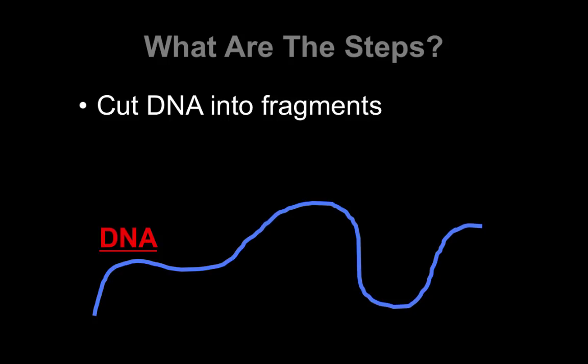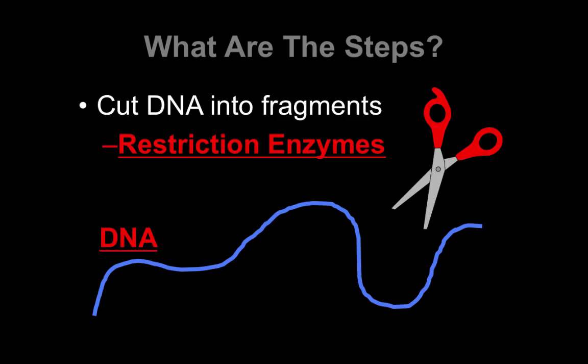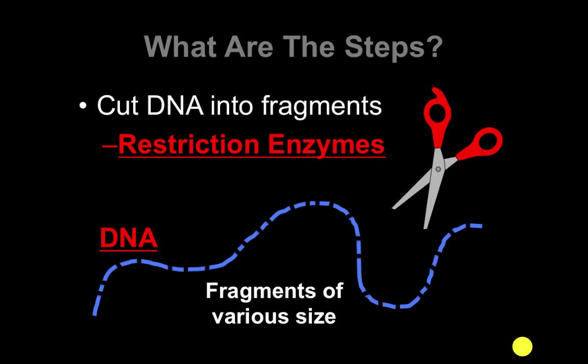The first thing we have to do is actually create fragments of DNA. We're going to use a restriction enzyme because that's what they do — they cut up DNA. Here I have my DNA, and I'm going to use my restriction enzyme to cut it into a number of fragments. Notice that these fragments are of different sizes. How many fragments there are and how large they are is unique to every person, and this is going to be key to making this DNA fingerprint.